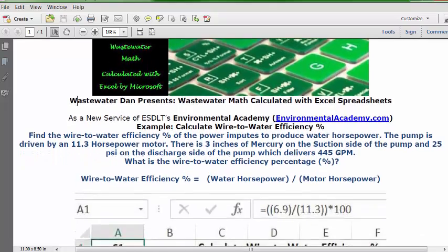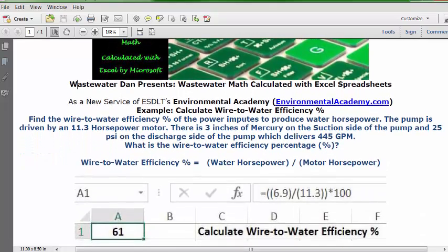Let's get started with today's problem. You can go to a blank spreadsheet, and in cell C1 you can type this description: Calculate wire-to-water efficiency percentage.